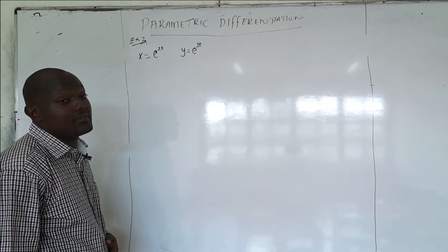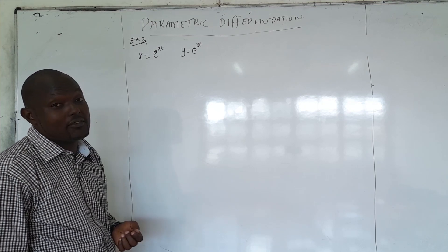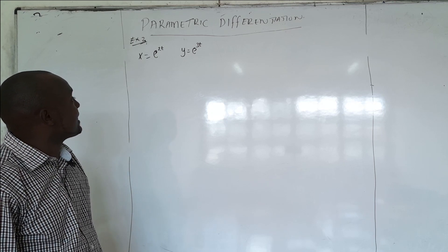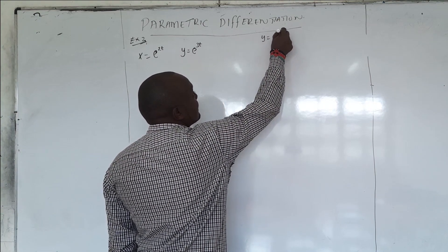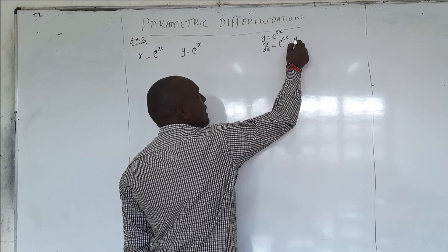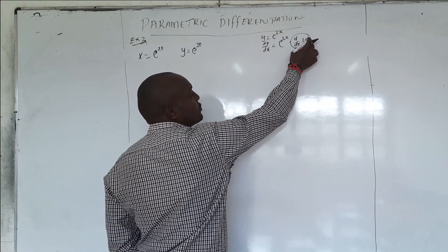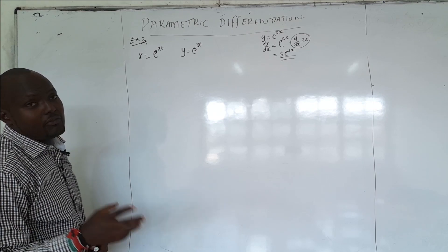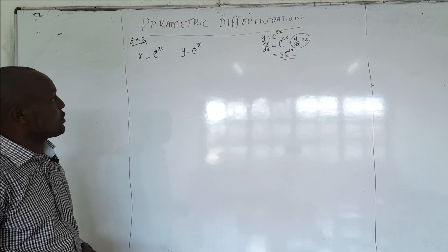Let's take example three using exponential functions. We have x equals e to the power 2T and y equals e to the power 3T. Recall from the earlier video on natural exponentials: if y equals e to the power 3x, then dy/dx equals 3e to the power 3x — the function remains the same but you multiply by the derivative of the power. For more examples, check the video on derivatives of natural exponentials.